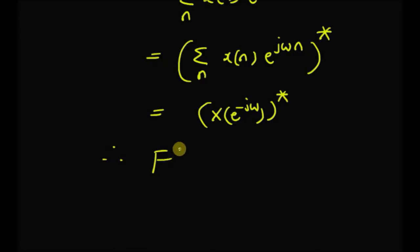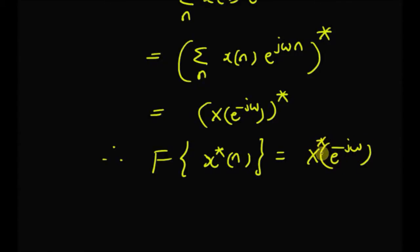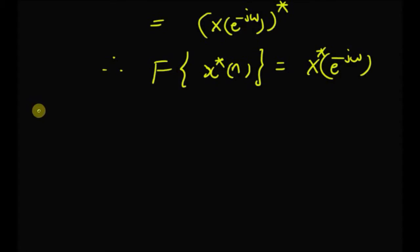Therefore, the DTFT of the conjugate of a sequence x(n) is equal to X*(e^{−jω}), that is, the conjugate of the DTFT where ω is replaced by −ω. The next property is folding.